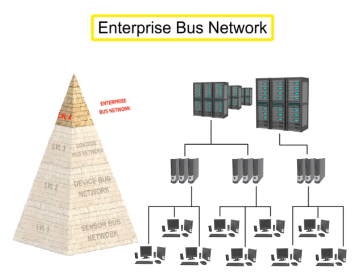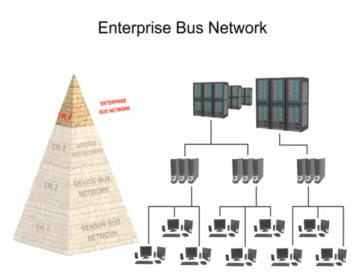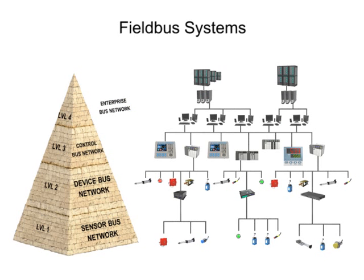The enterprise or information level network in a company connects all computers and departments together. It is the most overarching and complex of all the various network levels. This level of networking is primarily computer-driven, allowing for data collection, data monitoring, file transfers, and email exchange on a large scale. The various levels of interconnected fieldbus networking help to keep industry functioning smoothly and successfully.